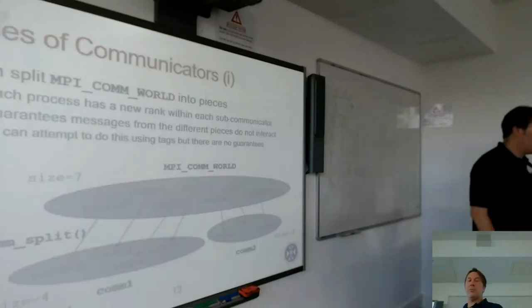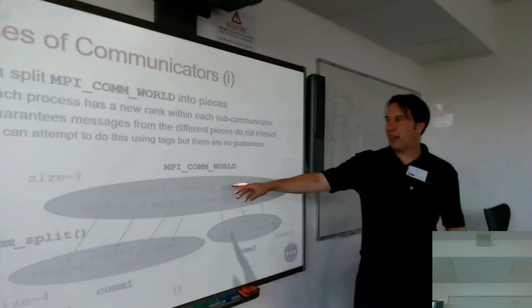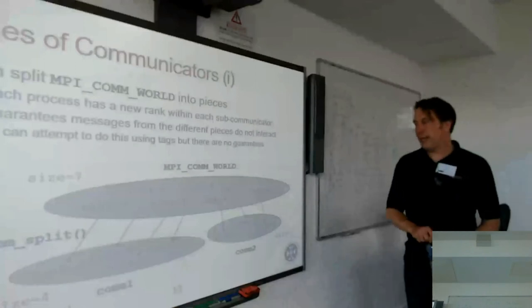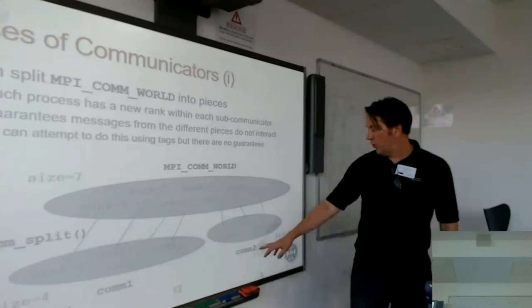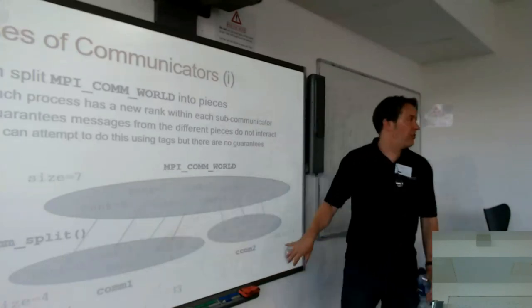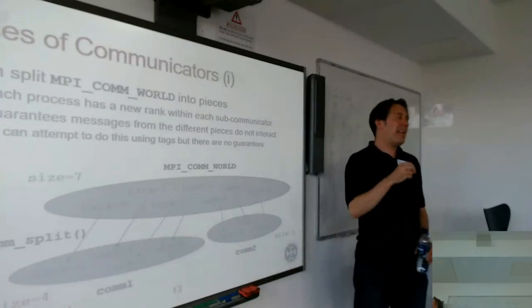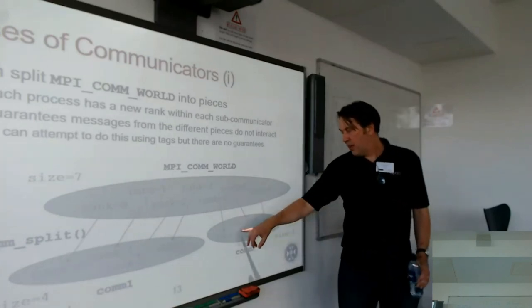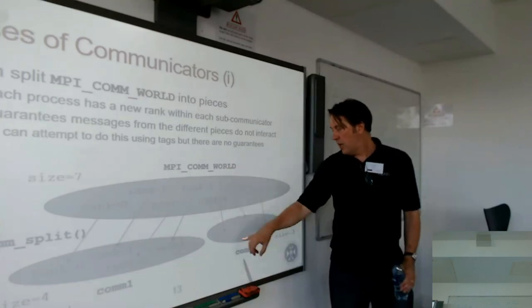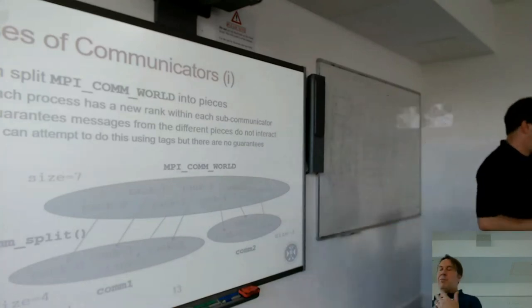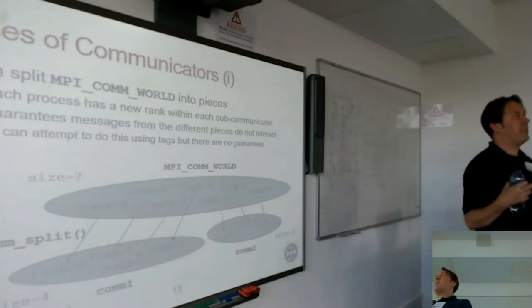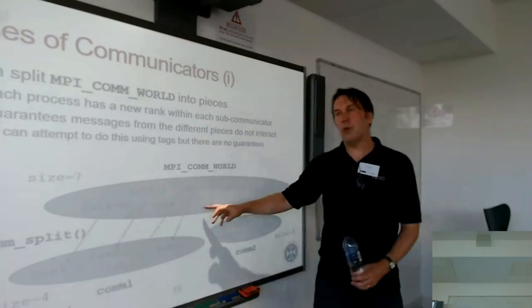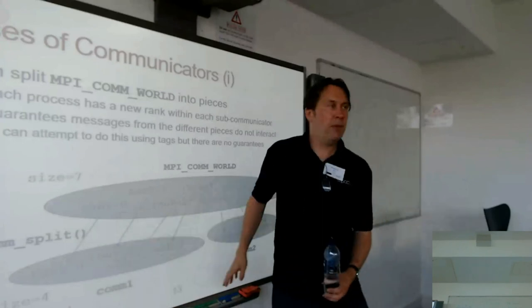There are two main reasons for communicators. One: you can split MPI_COMM_WORLD into pieces. There's a routine called MPI_Comm_split. You can split seven processes into two communicators — COM1 with size 4 and COM2 with size 3. You have to recompute your rank, because rank is a number between 0 and N-1 where N is the size of the communicator. Processes that are ranks 4, 5, 6 in the full world will be ranks 0, 1, 2 in the sub-communicator.